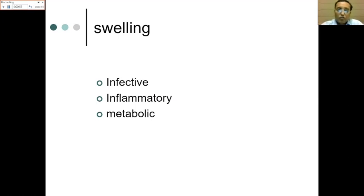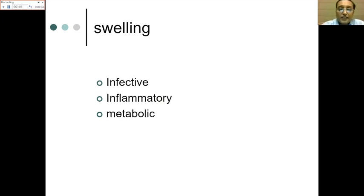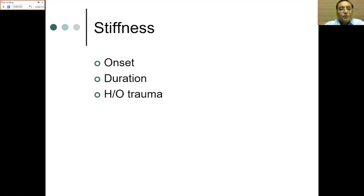Metabolic causes of swelling must also be factored in. If there is localized swelling, examine it in the usual way — site, size, shape, surface, margin, and consistency. All these must be done if we find swelling localized in and around the shoulder.